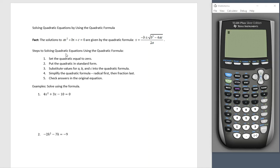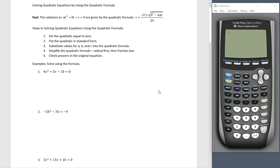Here's the steps to solving quadratic equations using the quadratic formula. First, we have to have our quadratic equal to zero. Put the quadratic in standard form, then substitute values for a, b, and c in the quadratic formula. When simplifying the quadratic formula, simplify the radical first and then the overall fraction last. We can always check our answers in the original equation.